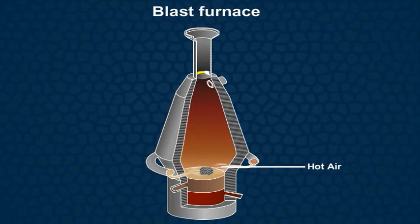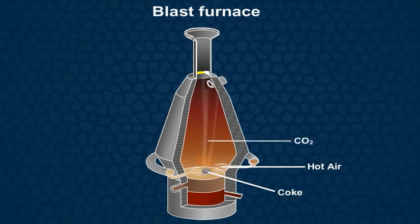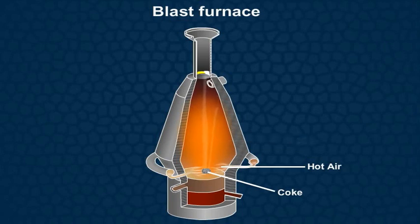As a result of this, the coke is burnt to produce carbon dioxide and the temperature at the bottom of the furnace is raised to about 2200 K. The carbon dioxide thus produced combines further with coke to produce carbon monoxide gas, which moves to the upper part of the furnace.